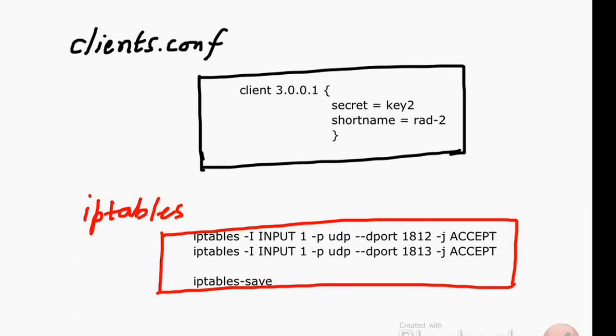You need to make sure the client is added. In our example, we had the client as 3.0.0.1. Add it with the secret key. The short name is only for description and not necessary, but the key requirement is the secret that needs to be entered and the client IP address.